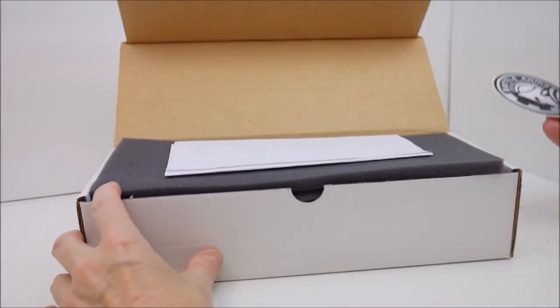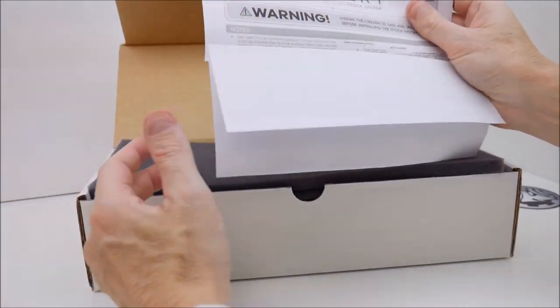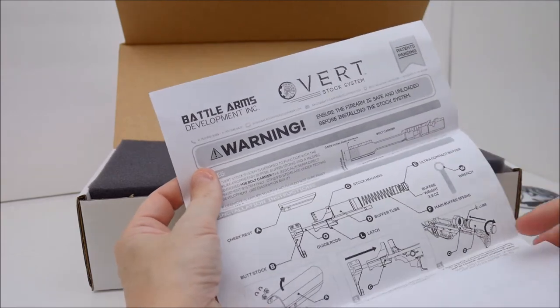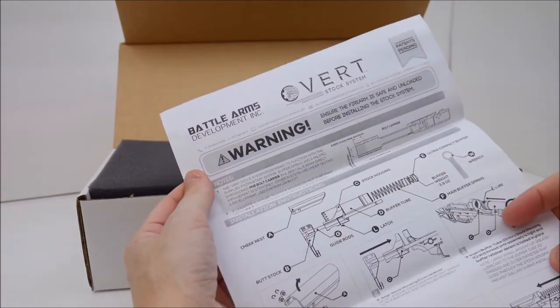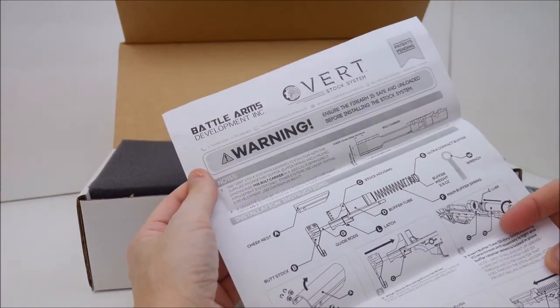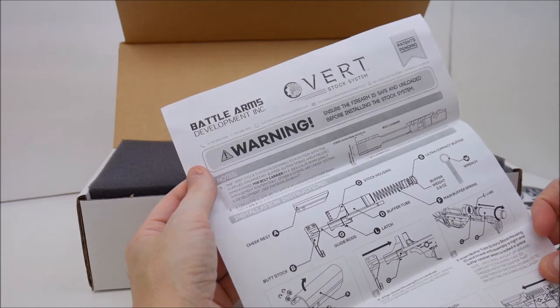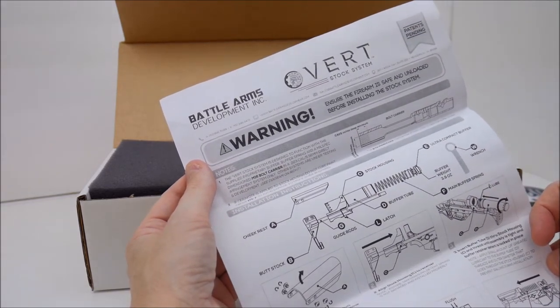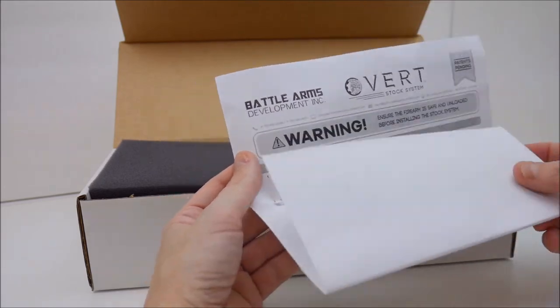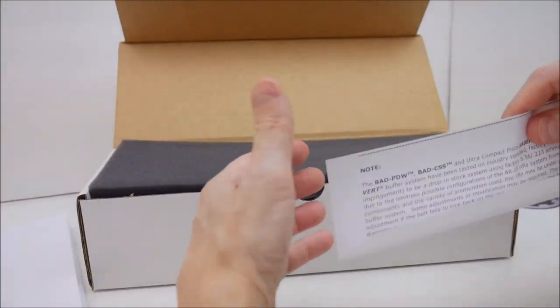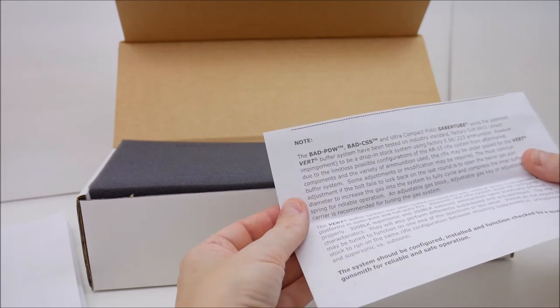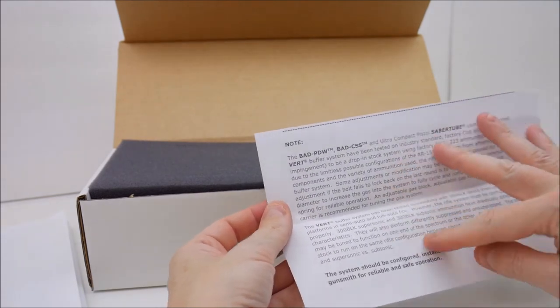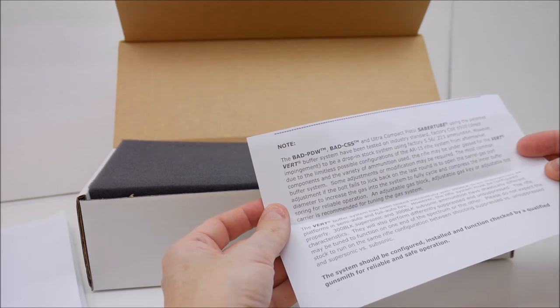We've got a Battle Arms Development decal that comes with it. These would be installation instructions. I'll graze over this and we'll talk about any highlights that I see in this. There's also a note here that talks about how this is tested on a Colt 6920.